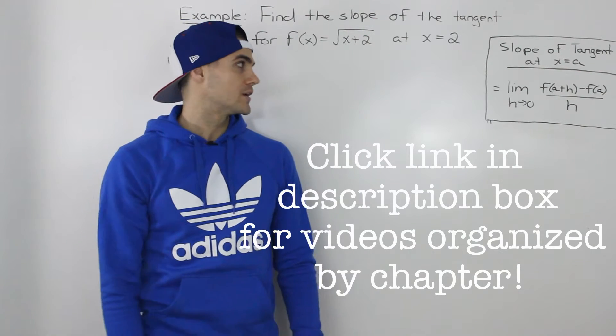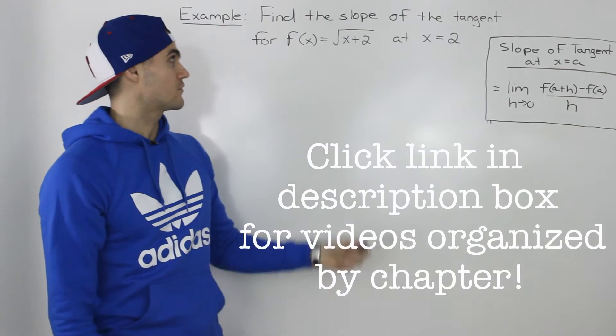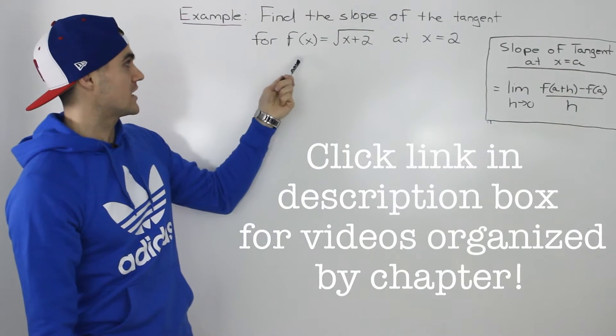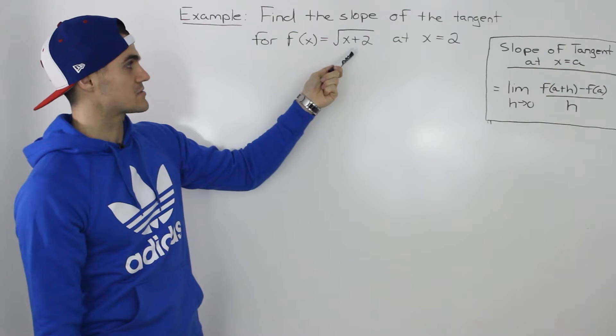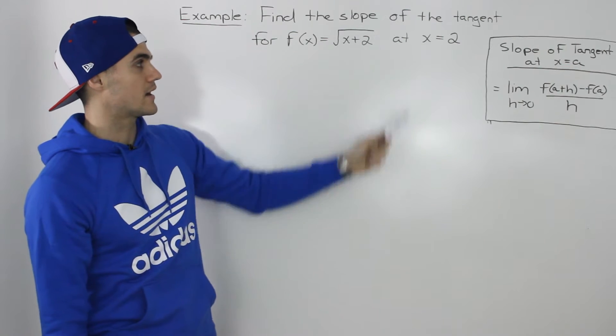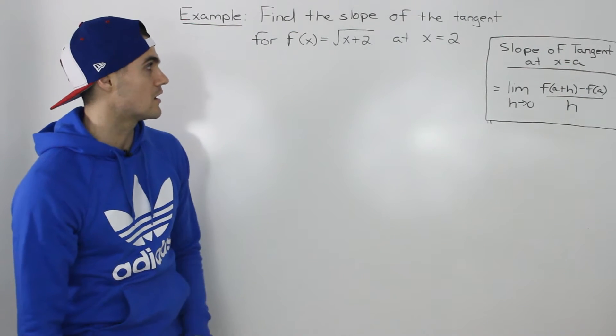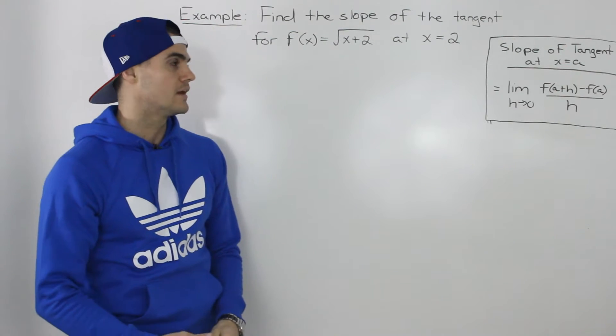What's up everybody. Moving on to our next example, we have to find the slope of the tangent for the function the square root of x plus 2 at an x value of 2.